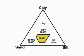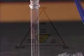Soils that are best for growing most crops are called loams. They roughly contain clay, silt, and sand in the volume proportions 20 to 40 to 40.